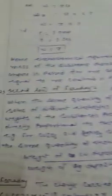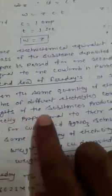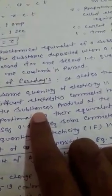The second law of Faraday states that when the same quantity of electricity is passed through solution of different electrolytes connected in series, the weight of the substance or ion produced at the electrode are directly proportional to their equivalent weight.